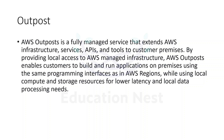Outpost is a pool of compute and storage. On Outpost, you can have resources such as EC2 instances, EBS volumes, ECS clusters, and RDS instances. By providing local access to AWS-managed infrastructure, Outpost enables us to build and run applications on-premise using the same programming interface as in an AWS region. If there are requirements of low latency, local data processing, or governance, Outpost would be very important.